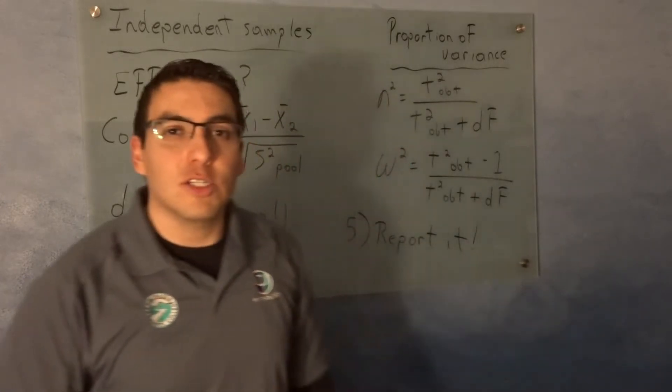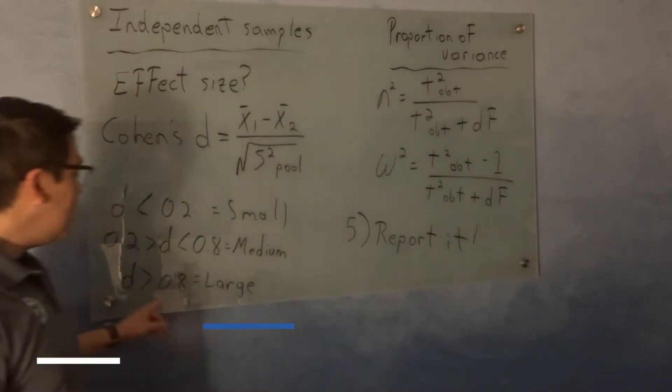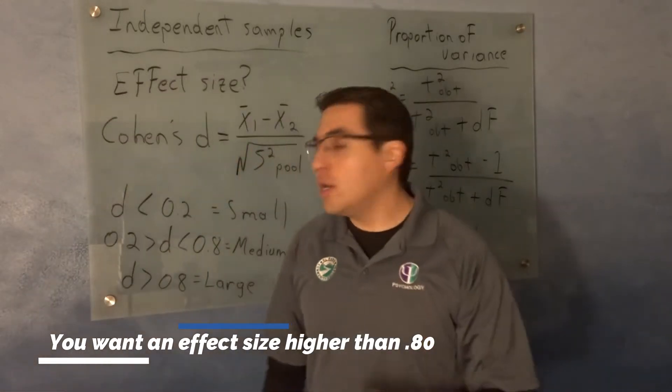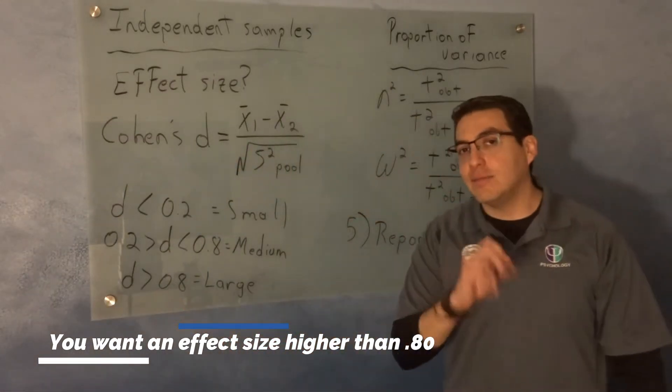That's what you want. So to get published, you need at least a 0.8. If you want to get published, you want at least a 0.8.